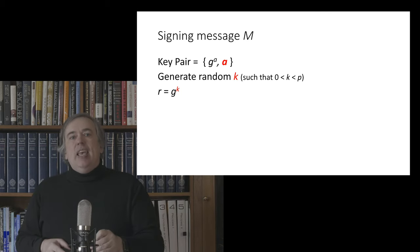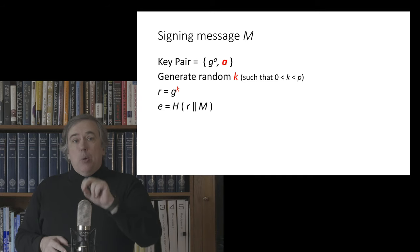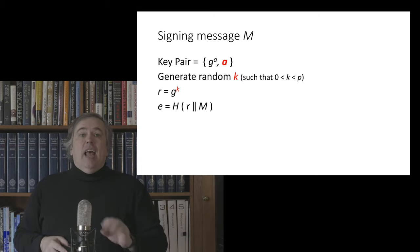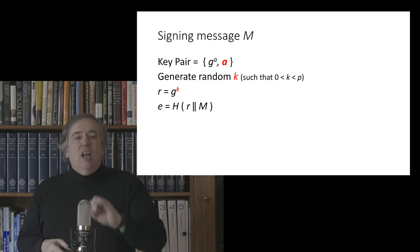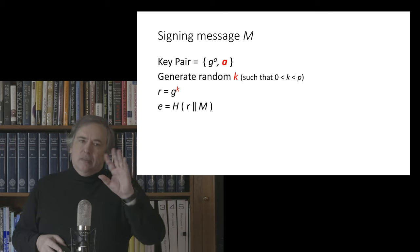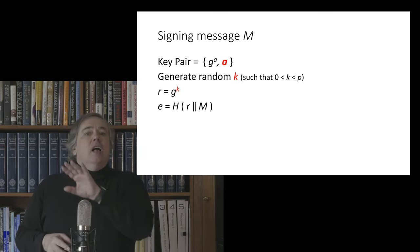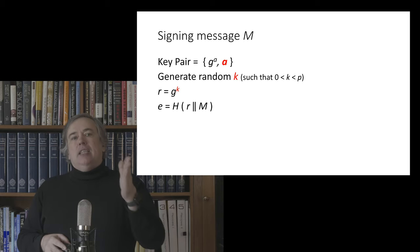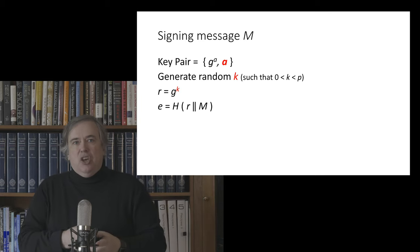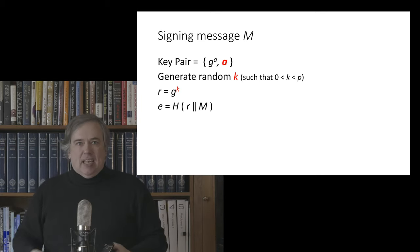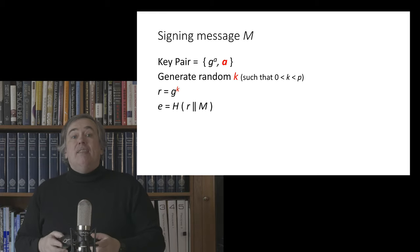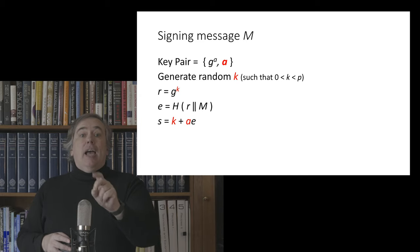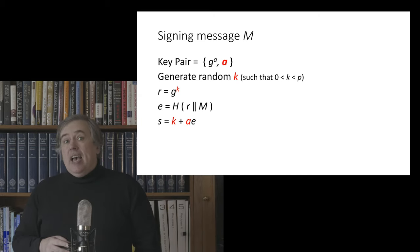Next thing we're going to do is we're going to calculate a value e, which is a hash of that value r we just generated concatenated with the message that we're going to sign. There's various ways that you can go about that concatenation. It matters, but the details I'm going to elide here. Just take it that this is a principled one-way function and that e depends upon r and M in an acceptably secure manner that's proof against extension attacks and all that stuff. And then finally we're going to calculate the value s, which is simply k plus the private key multiplied by the value e. And the signature value is then s and r, and both are presented mod p of course.